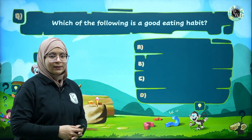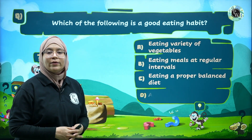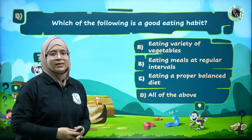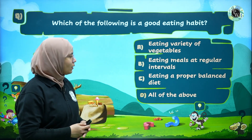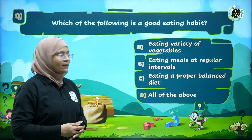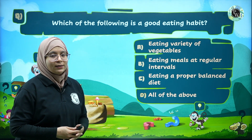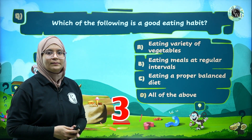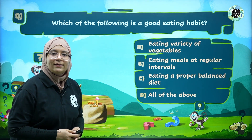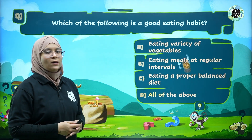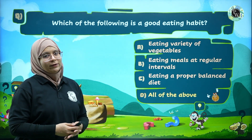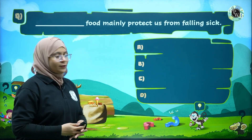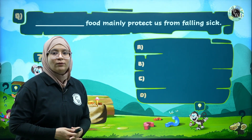Question 3: Which of the following is a good eating habit? Option A: eating a variety of vegetables, Option B: eating meals at regular intervals, Option C: eating a proper balanced diet, Option D: all of the above. The correct answer is Option D — all of the above.